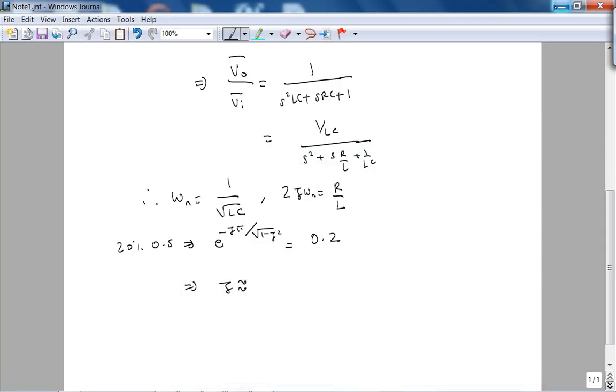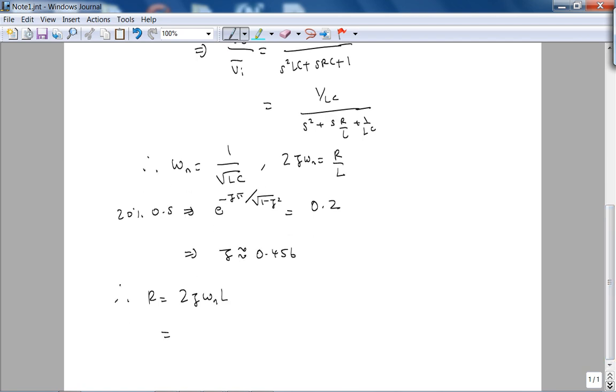In a sense, 20% overshoot implies that e to the minus zeta pi over square root of 1 minus zeta squared equals 0.2. This implies zeta is approximately, so I'm going to fire up my TI-89 here, and let me pause the lecture and solve for zeta. Okay, continuing, so I get zeta as approximately 0.456, therefore R equals 2 zeta omega N times L. So plugging in all the values, L is 1 henry, C is 1 microfarad, and I get R as approximately 912 ohms.